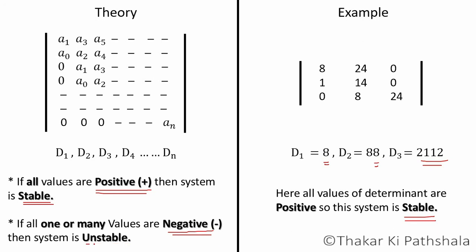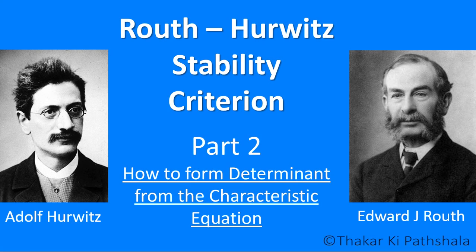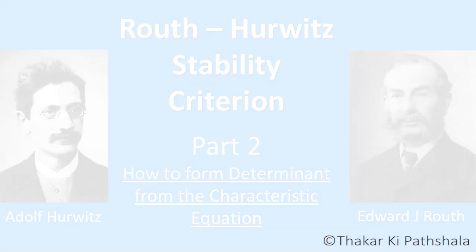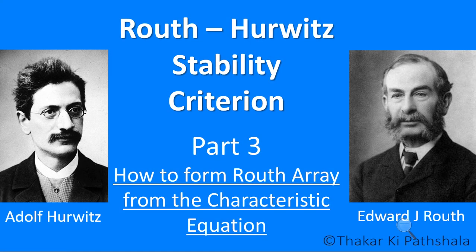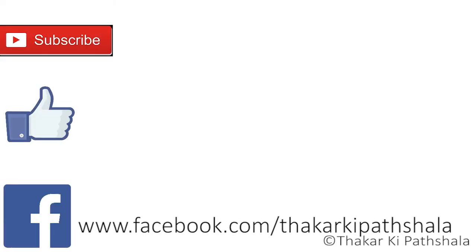I hope you have got a good idea about how to formulate the determinant from the given equation and how to solve that to ultimately find out the stability of the system. So that's it for now. This was the second part of this video series. Next part is coming very soon: how to form Routh array and how to solve that. Also I will be posting some more videos of solved examples by this method. So don't forget to hit that subscribe button. Like it if you have liked it. Comment down below if you have any suggestions or questions. Thank you.